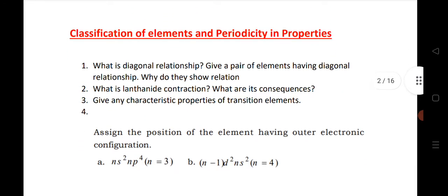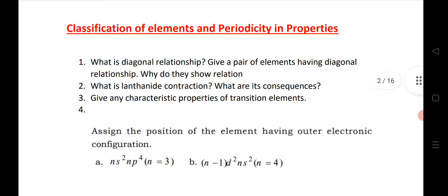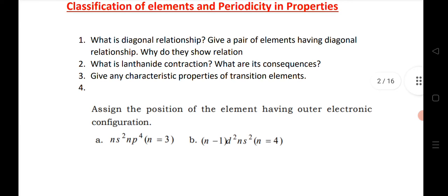Next chapter is classification of elements and periodicity in properties: diagonal relationship, lanthanide contraction, characteristic properties, and assign the position of the element having outermost electronic configuration.